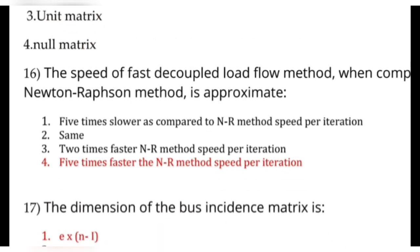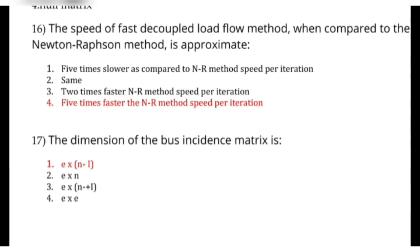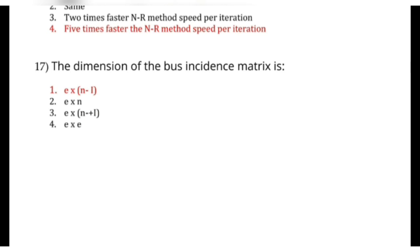Next question is: the speed of the fast decoupled load flow method compared to the Newton-Raphson method is approximately — options are 5 times slower, speed per iteration the same, 2 times faster than NR method speed per iteration, or 5 times faster than NR method speed per iteration. The correct answer is 5 times faster than the NR method speed per iteration. Next question: the dimension of the bus incidence matrix is — the correct answer is E×(N-1).